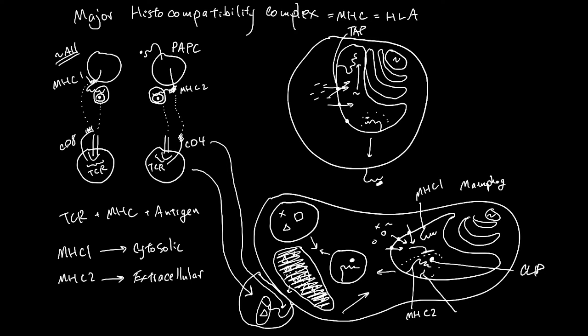MHC-2 also travel with protein called HLA-DM. And HLA-DM in this fused vesicle, bringing the, taking in extracellular stuff and replace the clip.